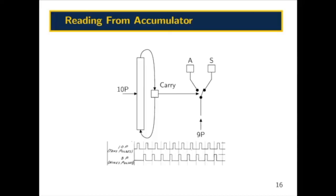Now, what's interesting is how does it read the digits out? It does so, as illustrated in this figure right here, by sending 10 pulses to each of the digits. That will cause the ring counter to cycle through all 10 positions back to its starting point. At some point along the way, it will flip the carry bit as the pulse goes from the 9 position back to the 0 position.